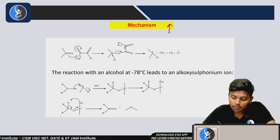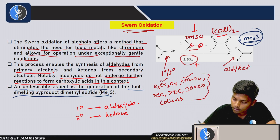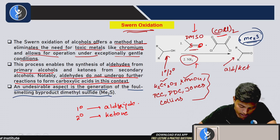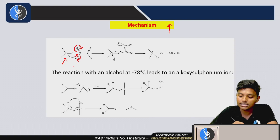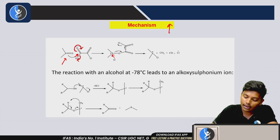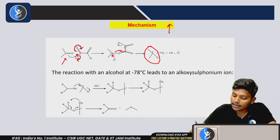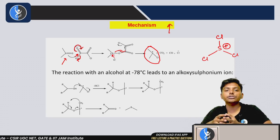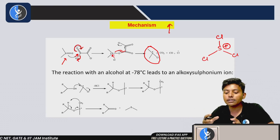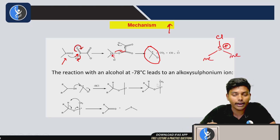Now let's see the mechanism of this reaction. First, the pi bond of DMSO attacks COCl₂, causing rearrangement where a chlorine Cl⁻ leaves. Then that Cl⁻ attacks at that position and forms an intermediate. The intermediate we get in Swern Oxidation is dimethyl chlorosulfonium ion. We must remember this intermediate because exam questions often ask: what is the intermediate in Swern Oxidation?